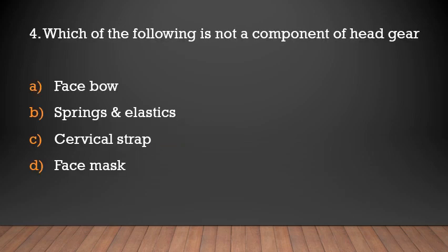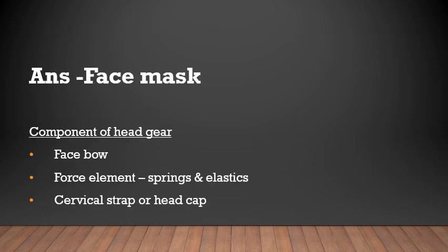Which of the following is not a component of headgear? Options: face bow, springs and elastics, cervical strap, or face mask? Answer: Face mask. Components of headgear include the face bow, which consists of an outer bow, inner bow, and a junction. The second component is the force element, which connects the face bow to the headcap or neck strap. The third component is the cervical strap or headcap.